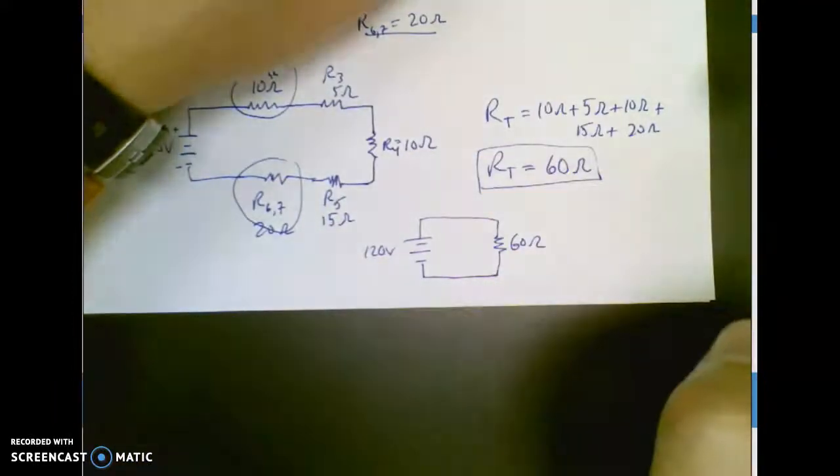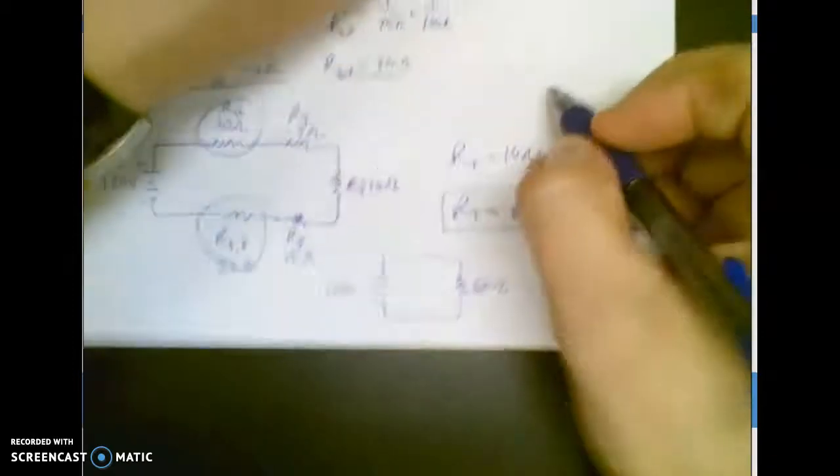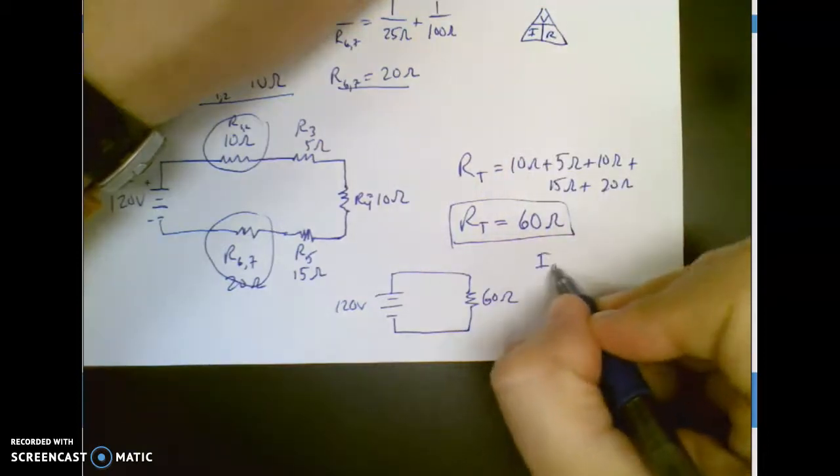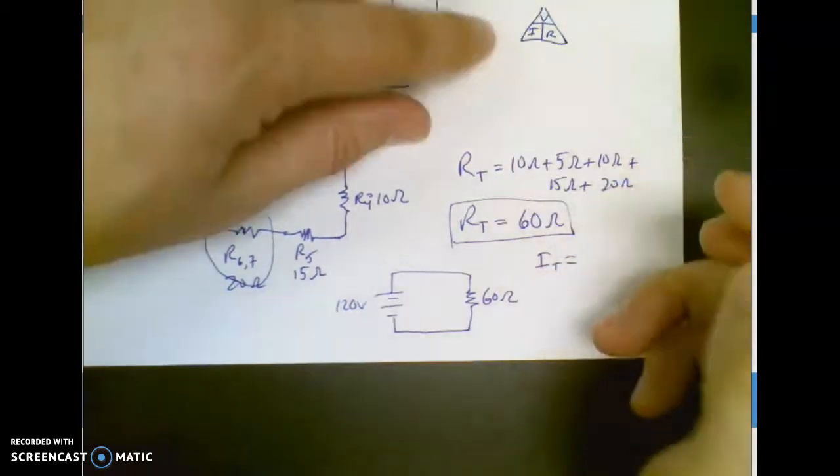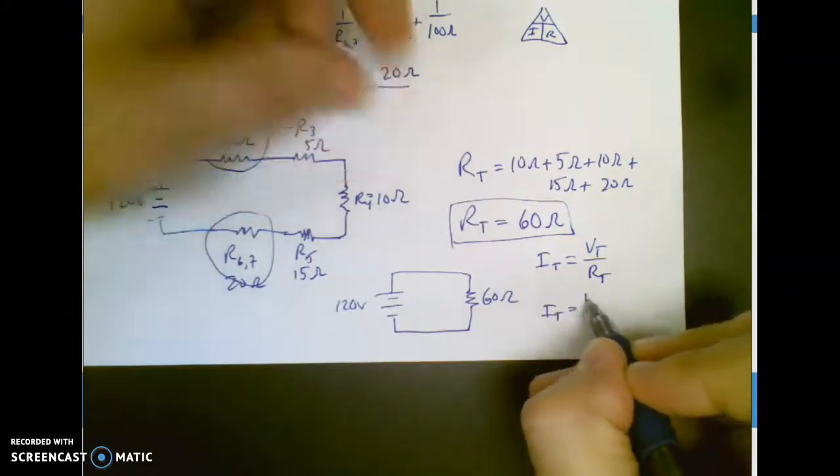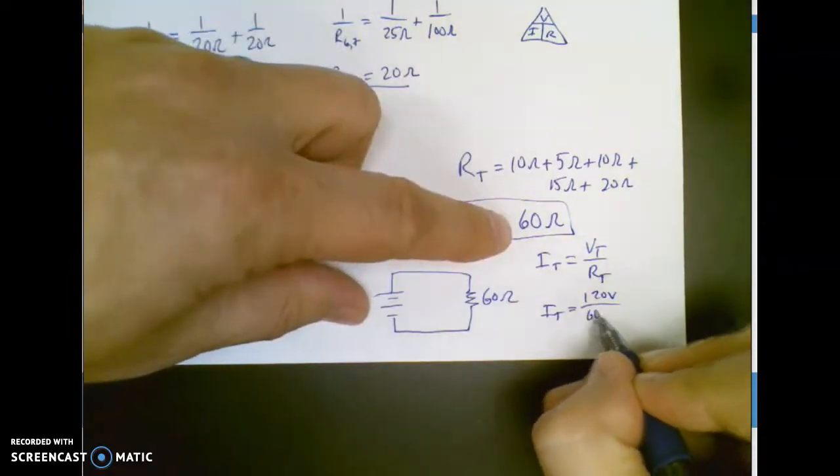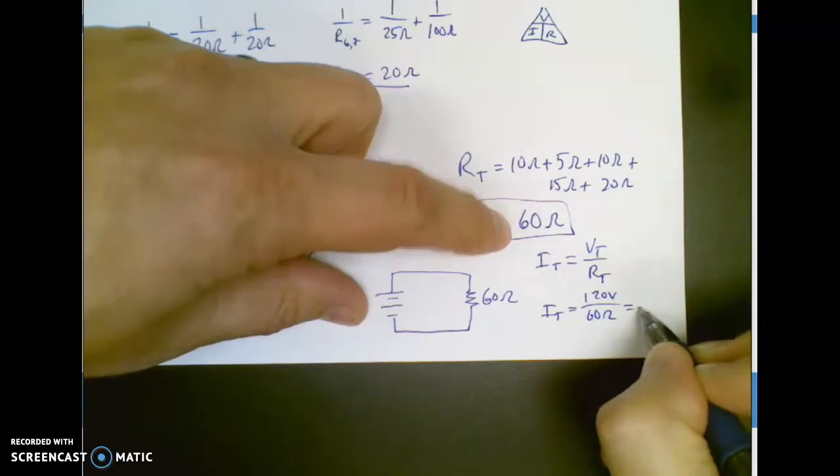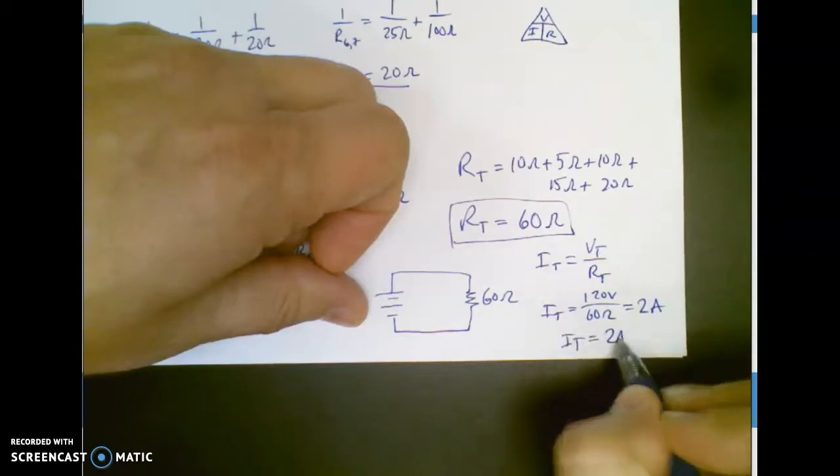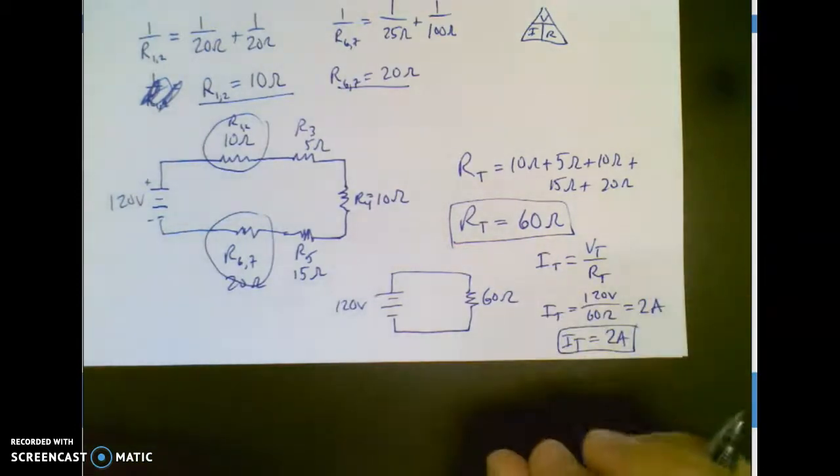Okay, so we got our VIR triangle. And I want my total current, which will equal, you cover that up, equals your total voltage over your total resistance. And I know my total voltage is 120 volts. I know my total resistance is 60 ohms. So I don't need a calculator for that. That's two amps of current. Boom. That was pretty nice. These aren't that bad. Although I did save the bad part for later.